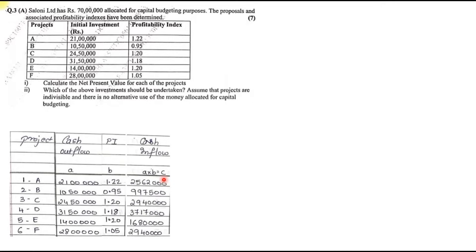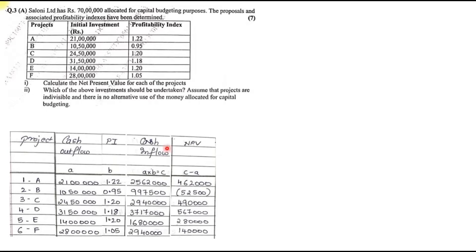To find NPV, the formula is: cash inflow (column C) minus cash outflow (column A). So NPV = cash inflow minus cash outflow. For example: 25,62,000 minus 21 lakh; 9,97,500 minus 10,50,000; 29,40,000 minus 24,50,000; and so on. That gives you the NPV for each project — that is Step 1.